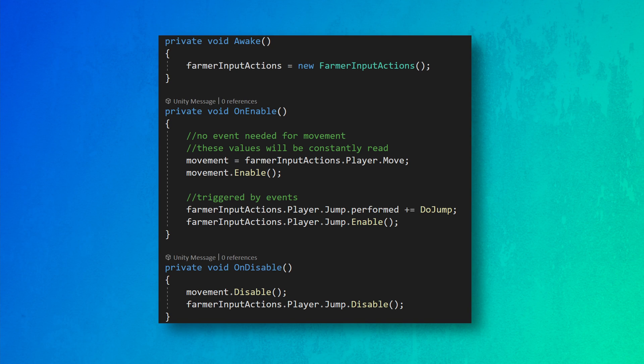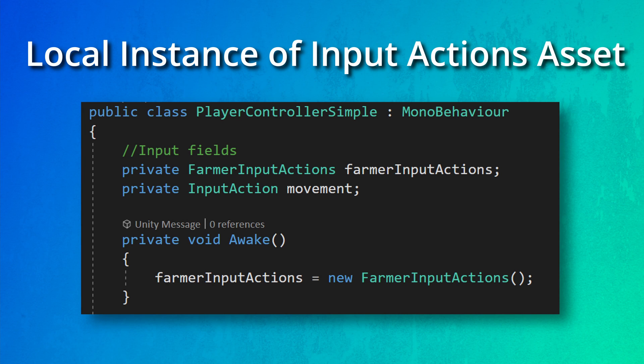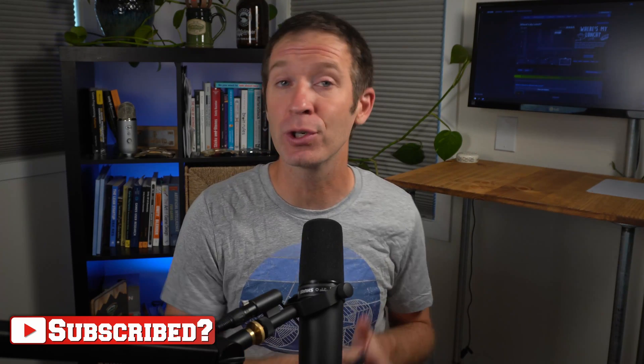With the new input system, you have more control, and the code that gives you that control, while more abstract, is generally far cleaner than it would be with an old input system. But first, we have a problem to fix. The simplest implementation of the new input system has each object create an instance of an input action asset. This works great if there's only one object reacting to player input. But if there's more than one object listening to input — say UI, sound effects, vehicles — this gets messy, exponentially more so if you intend on switching action maps, as all those objects will need to know which action map is currently in use.